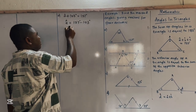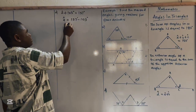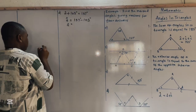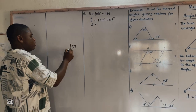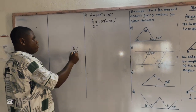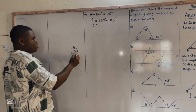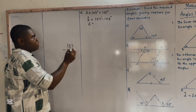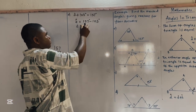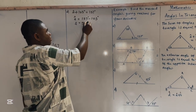So angle A equals 157 minus 103, which gives us 54 degrees.